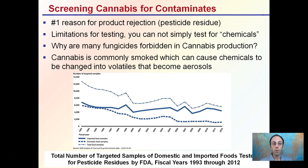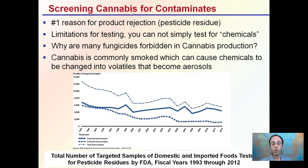Screening chemicals for contaminants is critical — the number one reason for product rejection is pesticide residue. Testing has limitations because you cannot broadly test for all chemicals; you typically have to test for a particular chemical suspected to be on the plant. Many fungicides are forbidden from cannabis production because cannabis is commonly smoked, which can cause chemicals to be converted into volatiles and aerosols, changing the chemical profile and potentially making it more hazardous.